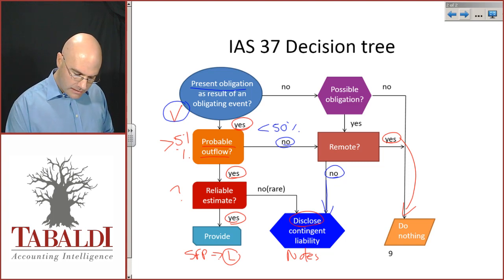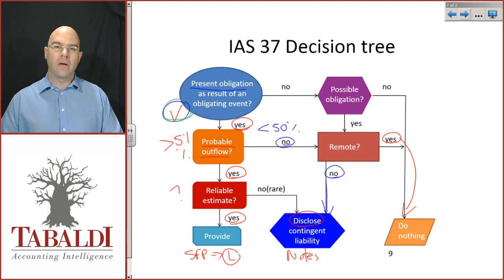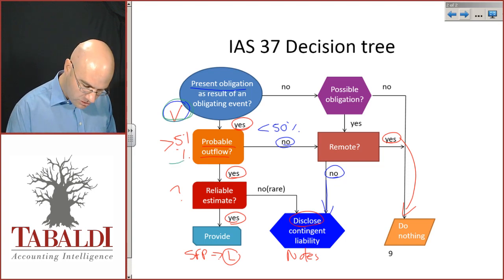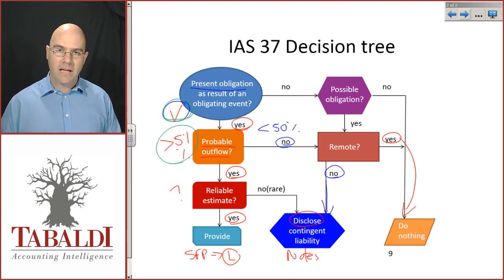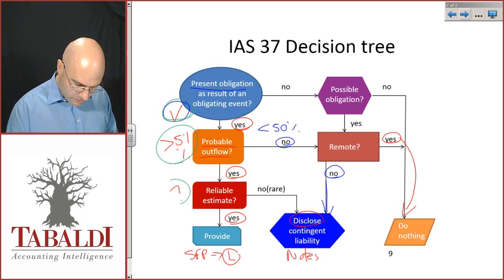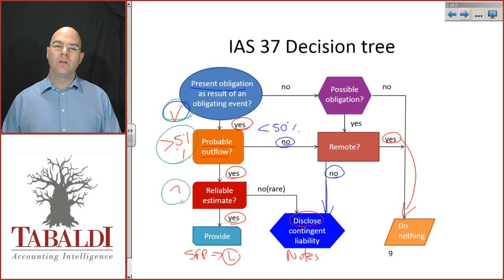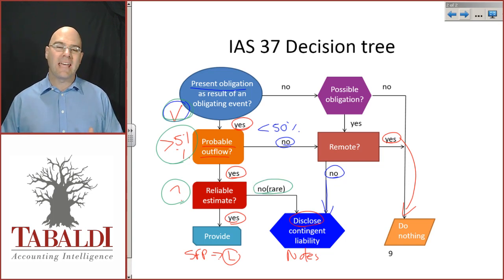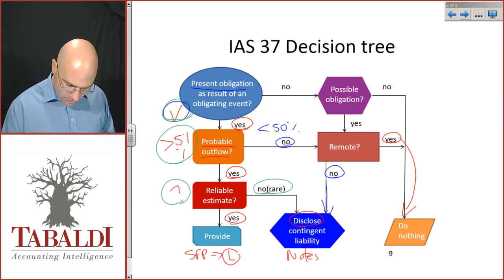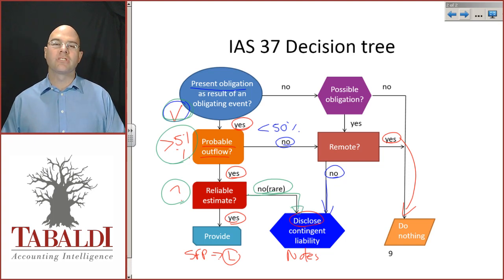Going back once more: if there is a present obligation and the outflow is greater than 51% probable, but in the very rare circumstance where I cannot make a reliable estimate, then I will disclose a contingent liability only.